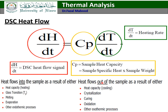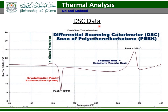The DSC curve shows: the glass transition, the crystallization peak (exothermic), the thermal melting peak (endothermic — absorption of heat), and other transitions. Here you can see these different features on the DSC curve.